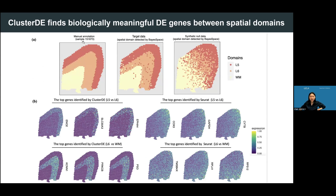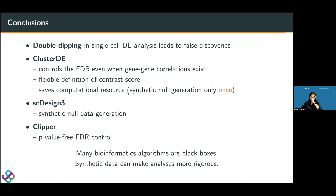We also extended ClusterDE to spatial transcriptomics data. When spatial clustering algorithms find spatial domains and users want to decide whether domains should be merged, we generate synthetic null data where the domain boundary is smooth — no sharp transitions — as a negative control. The genes identified as top DE genes by ClusterDE are more visually distinguishable and better markers of spatial domains than those identified by Seurat alone.